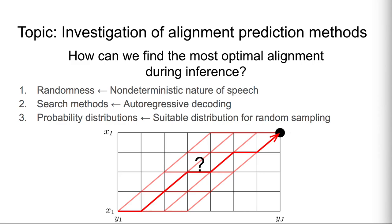During training, SSNT-TTS considers all possible alignments to compute the marginal probability. The focus of this paper is inference: how can we find the most optimal alignment during inference? We investigate three aspects: randomness, search methods, and probability distributions.